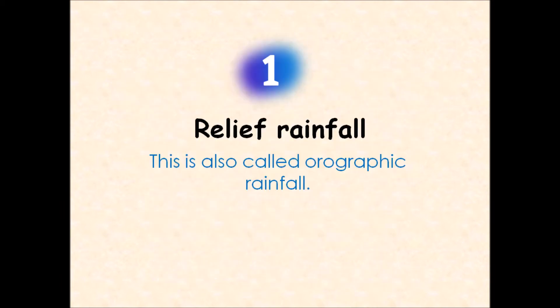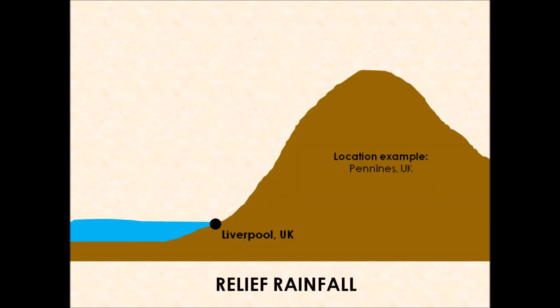We're going to start off by looking at what we call relief rainfall. Relief rainfall, when we think about the word relief, we're thinking about the shape of the land. So this type of rainfall involves some type of hill or mountain type of region. If we're thinking about the UK for this particular example, we could have our mountains as our Pennines, the spine of England if you like, which means that we have the west coast of England on the screen here, so we could have Liverpool there for example. And then on the east side of our screen, that is where we would move into the eastern part of England. When we're talking about relief rainfall, that is involving this type of mountainous or hill shape, so our Pennines is going to be our example for that.